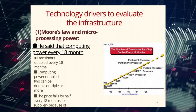Technology drivers that evaluate the infrastructure. First: Moore's Law and microprocessing power — computing power doubles every 18 months. Transistors double every 18 months, meaning computing power can be doubled, trebled, or more. The price falls by half every 18 months for suppliers due to experience.